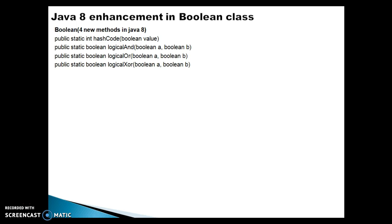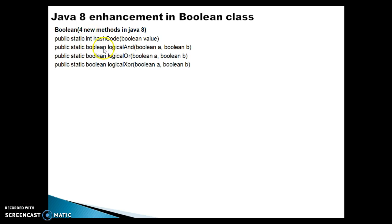On the slide, I have listed four static methods. These four methods have been added in Java 8 to the Boolean wrapper class. The first method is called hashCode. When you pass any Boolean value, it returns the hash code of that Boolean value as an integer.